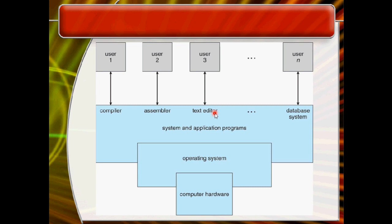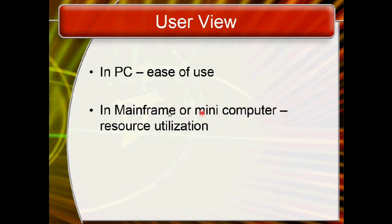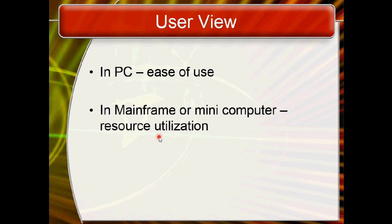These are the definitions of the operating system. From the user's point of view, what we expect from an operating system are two main points. One is ease of use, especially for personal computers. The second thing we expect from the OS is resource utilization — using resources effectively.